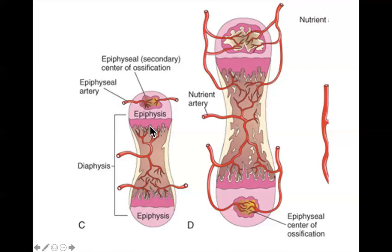Once the bone reaches its adult length, the growth plate also ossifies the same way all other cartilage ossifies. While the bone is lengthening, its width also needs to be maintained — bones don't just get longer, they get thicker and stronger. This is accomplished by modulating the activity rates of osteoblasts and osteoclasts. The blasts lay down new bone and the clasts absorb old bone, so as the bone gets thicker the osteoblasts are simply laying down more new bone tissue than the osteoclasts are absorbing.